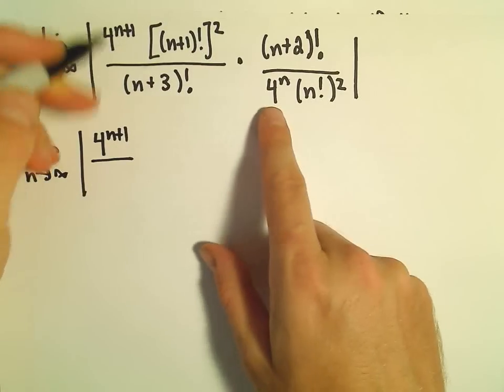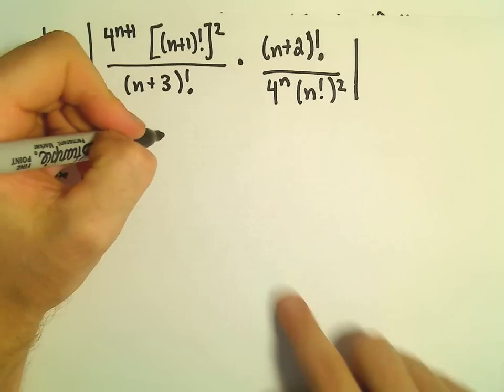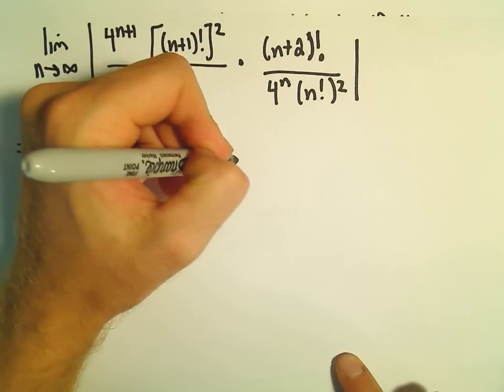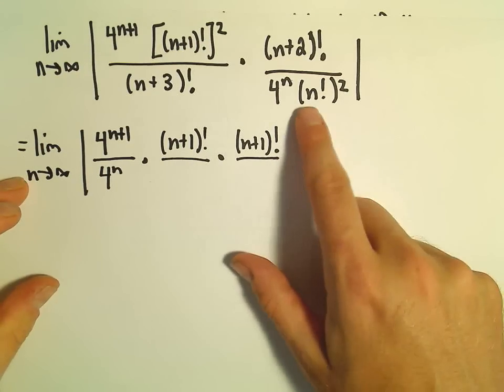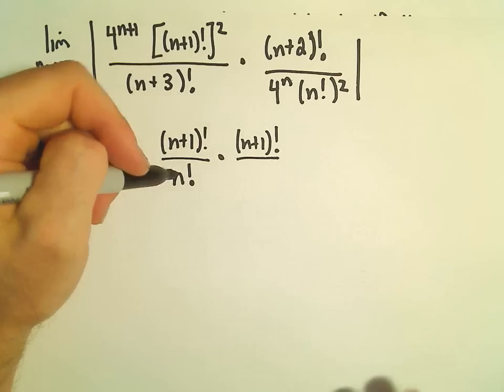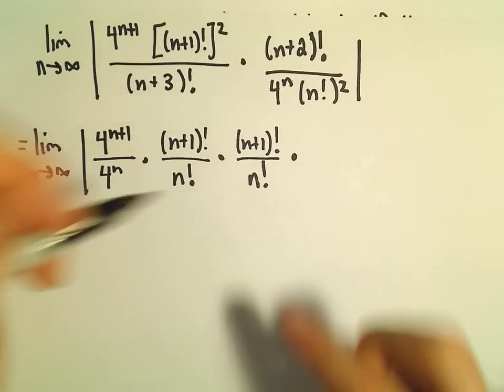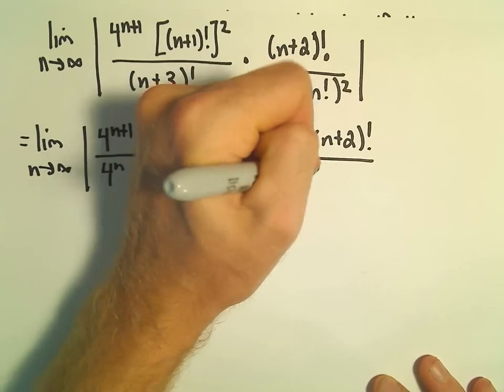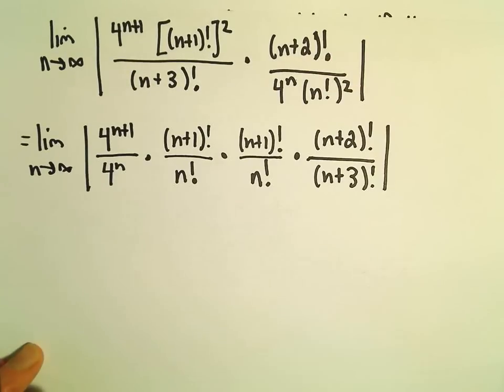We have 4 to the n plus 1. I'm going to put the 4 to the n in the denominator. We have an n plus 1 factorial squared, so that means we have n plus 1 factorial times another n plus 1 factorial. We've got the n factorial squared, so I'm going to put an n factorial here and another n factorial there. And then our n plus 2 factorial over n plus 3 factorial.